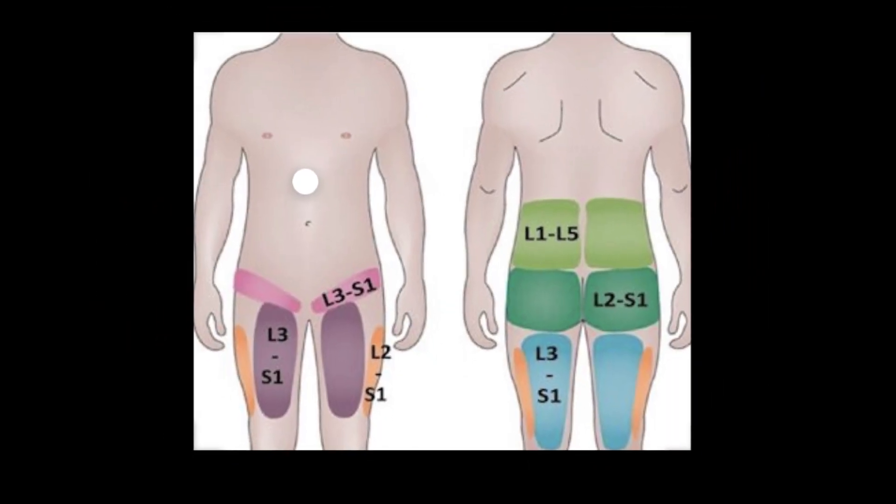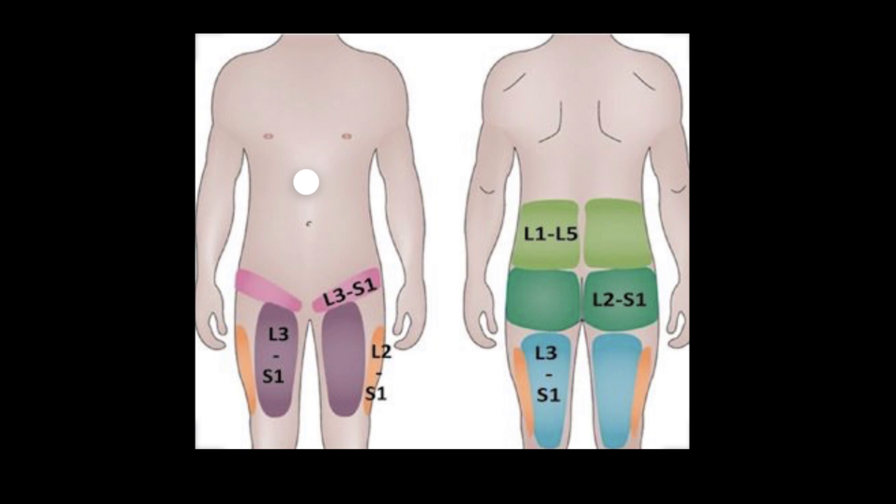In this first diagram we see the distribution of pain that patients typically experience from the facet joints. As you can see, facet joint pain can cause pain in the lower back all the way down to the buttocks and upper thighs.